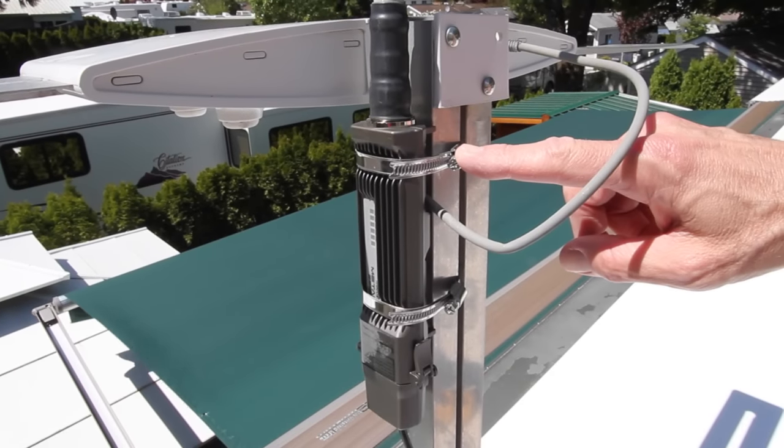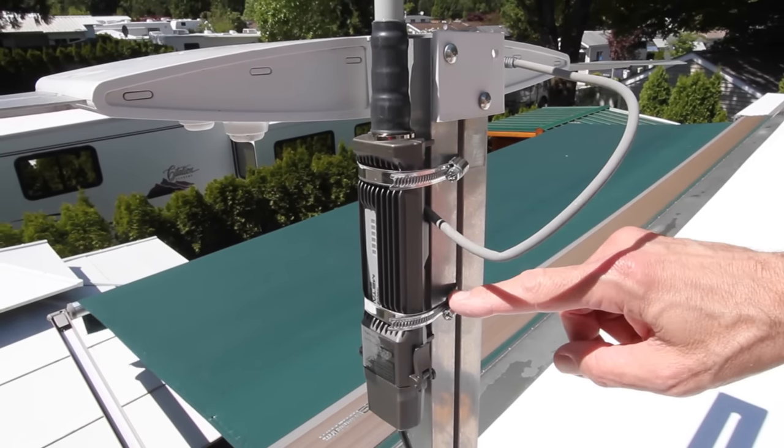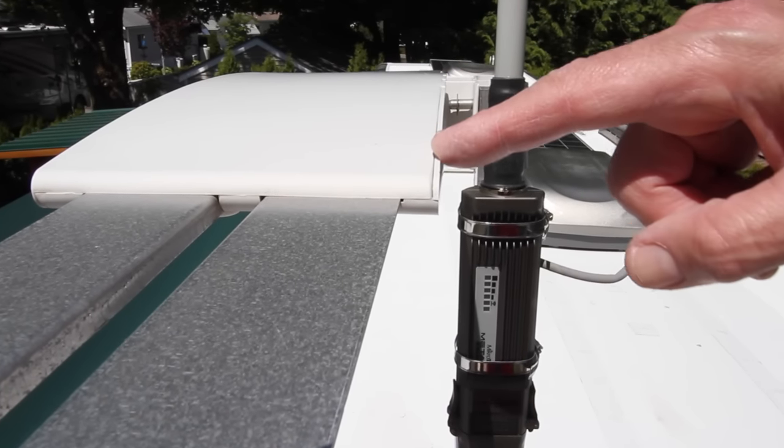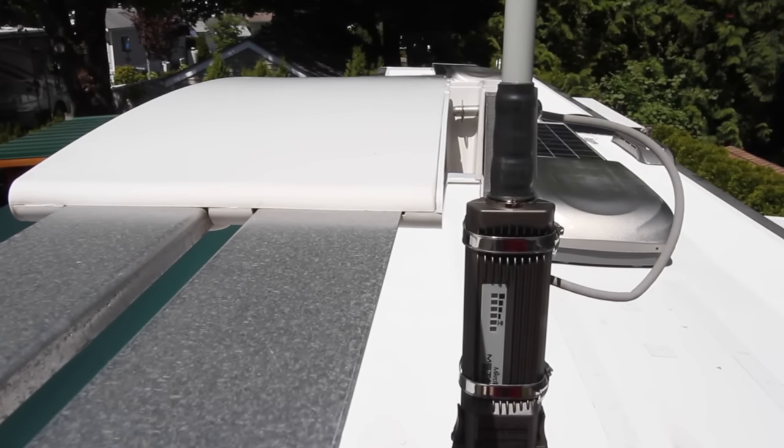You can see we install the clamps all the way at the top of the arm. This extends the Wi-Fi Ranger antenna completely above the top of the batwing for the best possible reception.